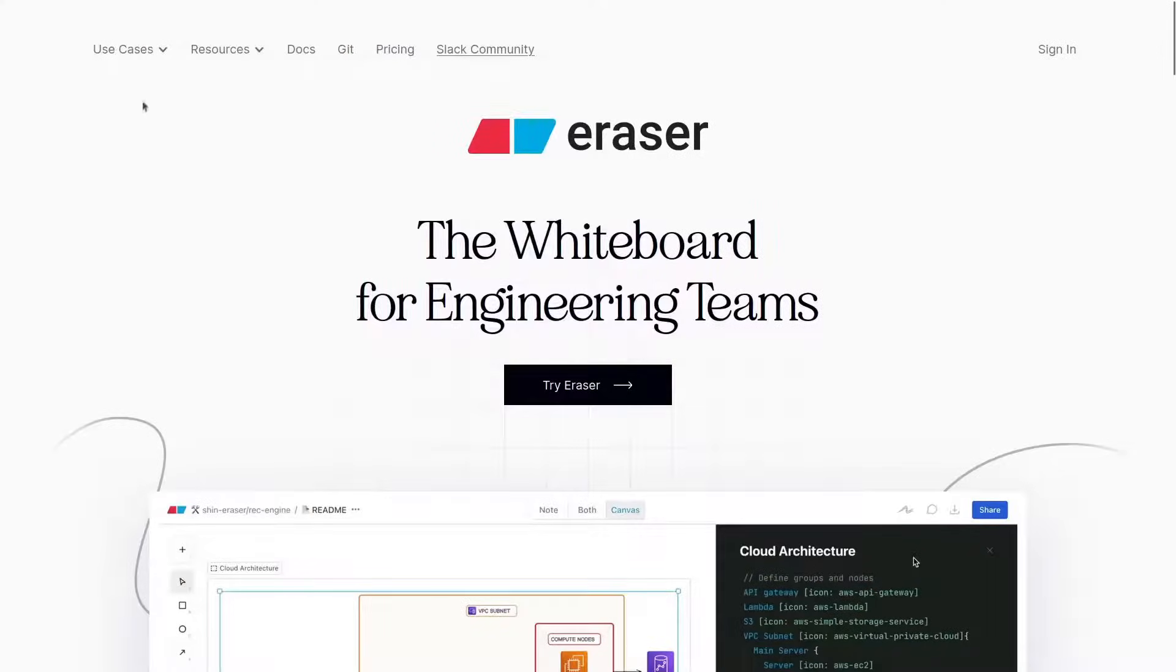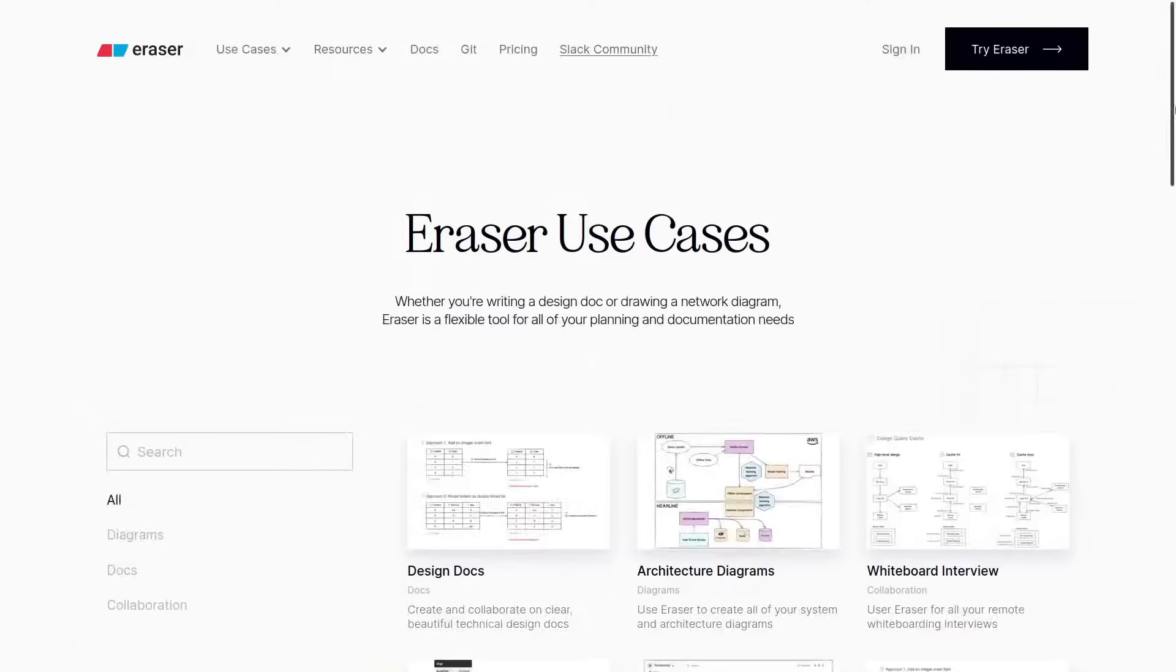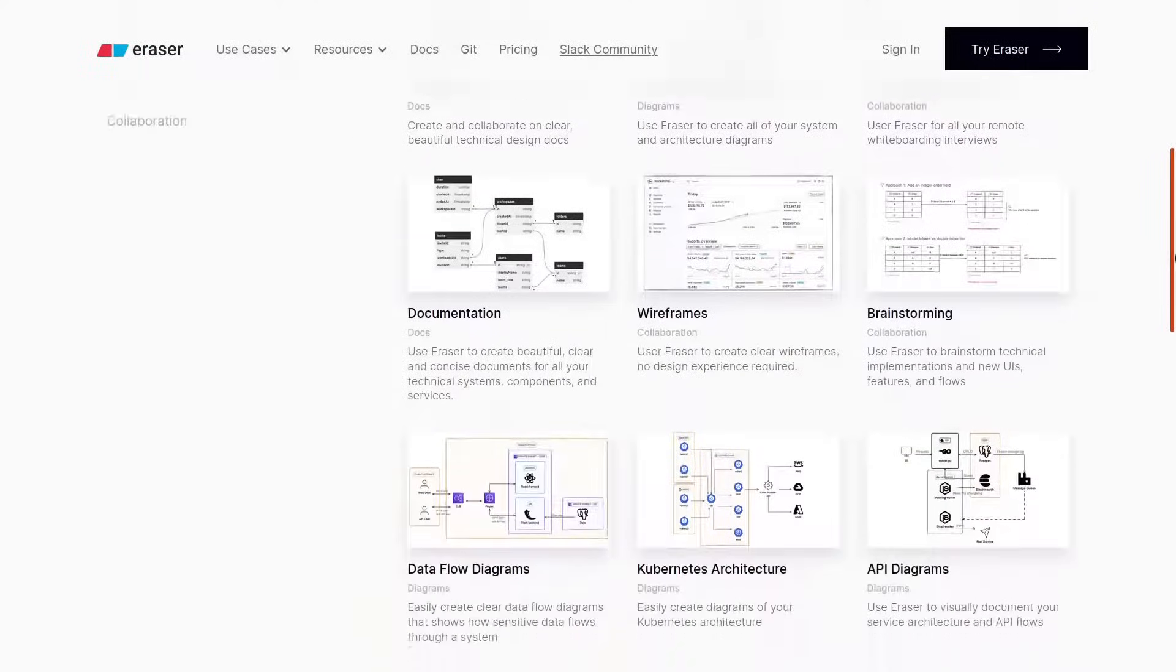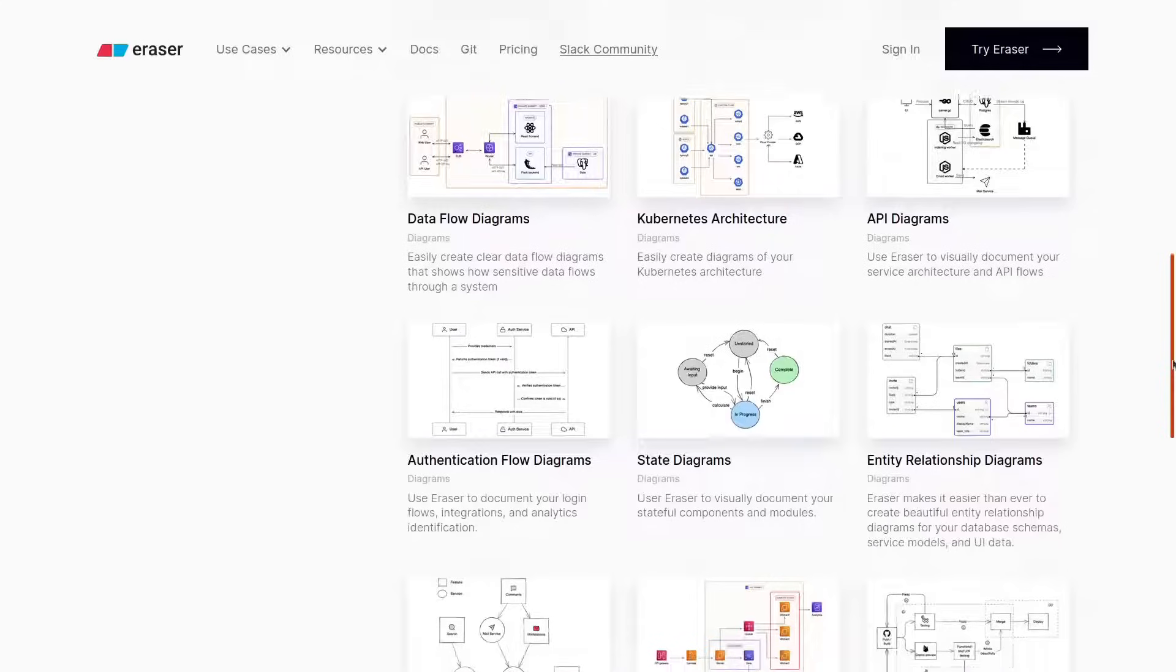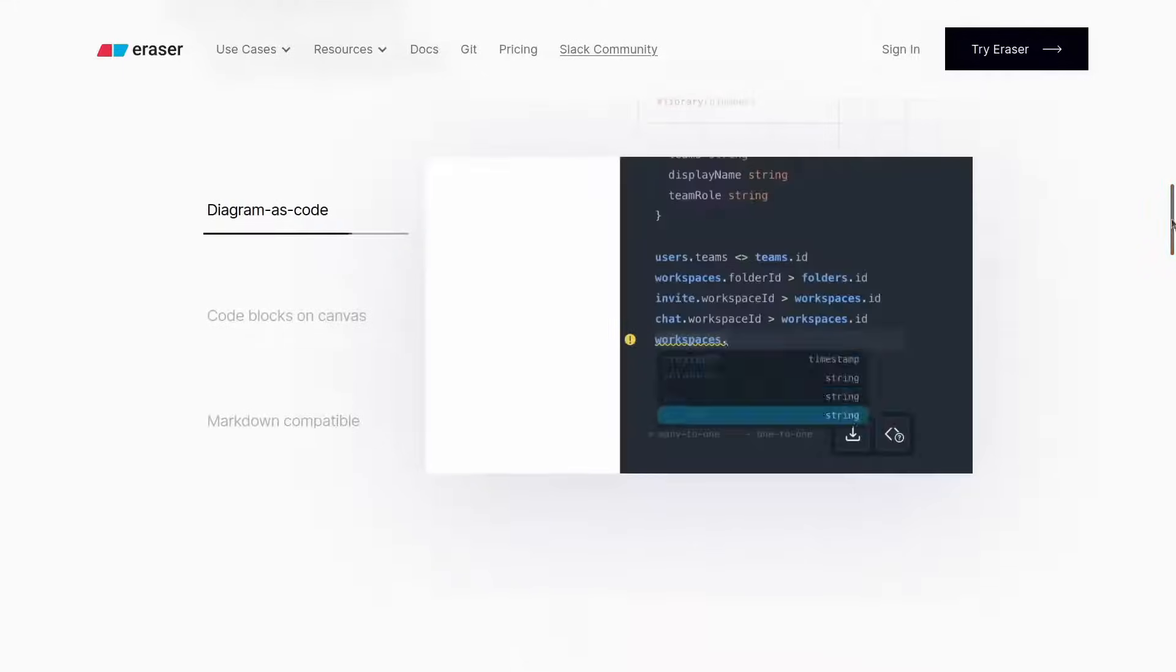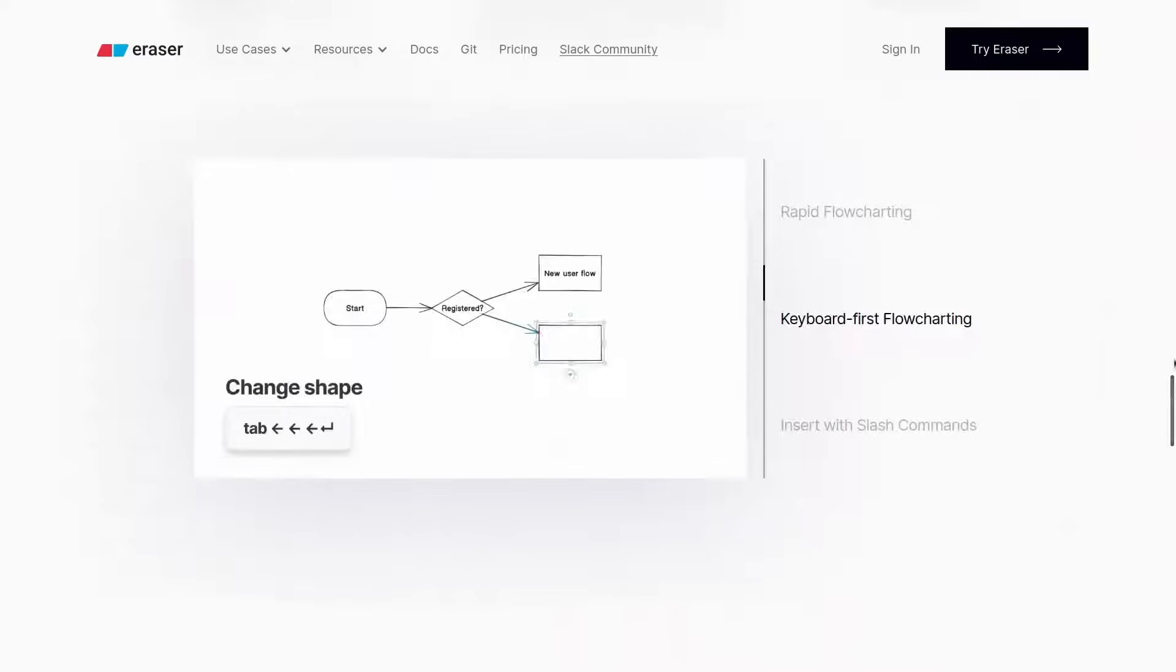Eraser is a diagrams and docs hub for engineering teams. It can be used to draw architecture diagrams, create technical planning docs, conduct whiteboard interviews, and sketch wireframes. Eraser differentiates with dev-targeted features like markdown notes, diagram as code, and keyboard-first flowcharting.